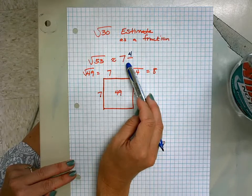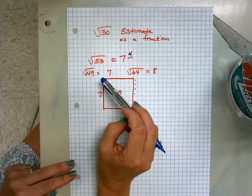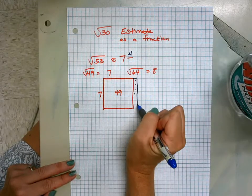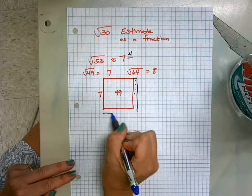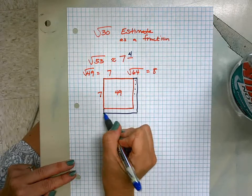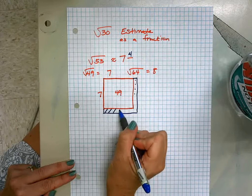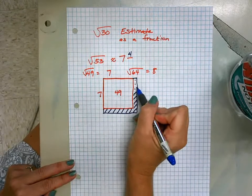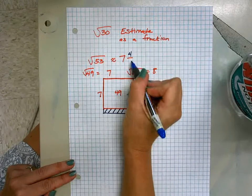And what's my denominator going to be? My denominator is going to be the extra that I need to make my 8 by 8 square to get my square root of 64. So that's going to be 1, 2, 3, 4, 5, 6, 7, 8, 9, 10, 11, 12, 13, 14, 15.